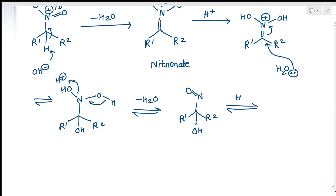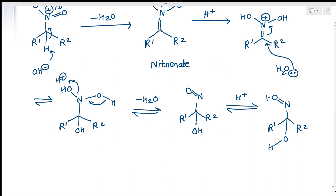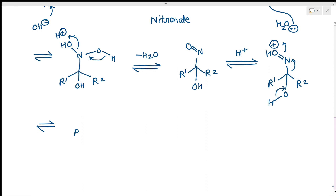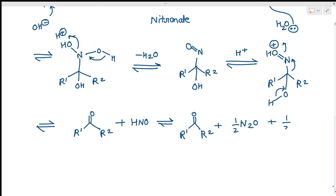Again, H plus attacks the intermediate giving R1, R2 with O, H, and a double bond carrying a positive charge. This bond moves and that bond moves in this manner — this is again a reversible step — giving R1 R2 double bond O plus H, and in a reversible step this ultimately gives R1 R2 double bond O plus half N2O plus half H2O. This is the complete mechanism of the Nef reaction.